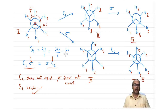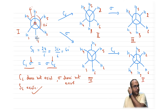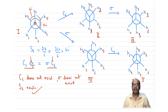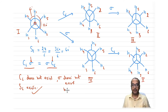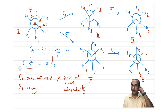We have now verified that S6 is present in staggered ethane, but C6 and σ do not exist independently — neither of them individually produces an equivalent configuration, yet S6 does.